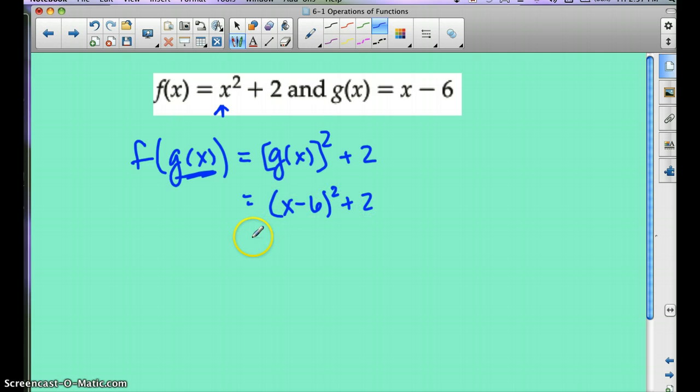And remember, any time we square a binomial, we've got to FOIL. So it looks like we're going to have x squared minus 12x plus 36, plus 2. Can we go ahead and simplify this down? Sure we can. We've got x squared minus 12x plus 38. That's going to be f of g of x.